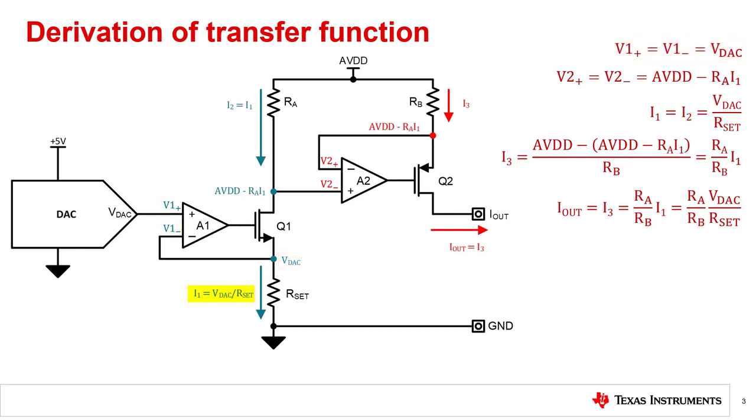The current through RSET is equal to Vdac over RSET. In a MOSFET, the drain current is equal to the source current. So the current through RA equals the current through RSET. The voltage at V2 plus equals the supply voltage minus the voltage drop across RA, which is RA times I1. To set the inputs of A2 equal, the RB resistor must therefore have the same voltage drop across it as RA. I3 therefore equals I1 multiplied by the ratio of RA over RB. Iout is then equal to I3 and can be defined by expanding I1 back to Vdac in RSET, as seen in the equation here.